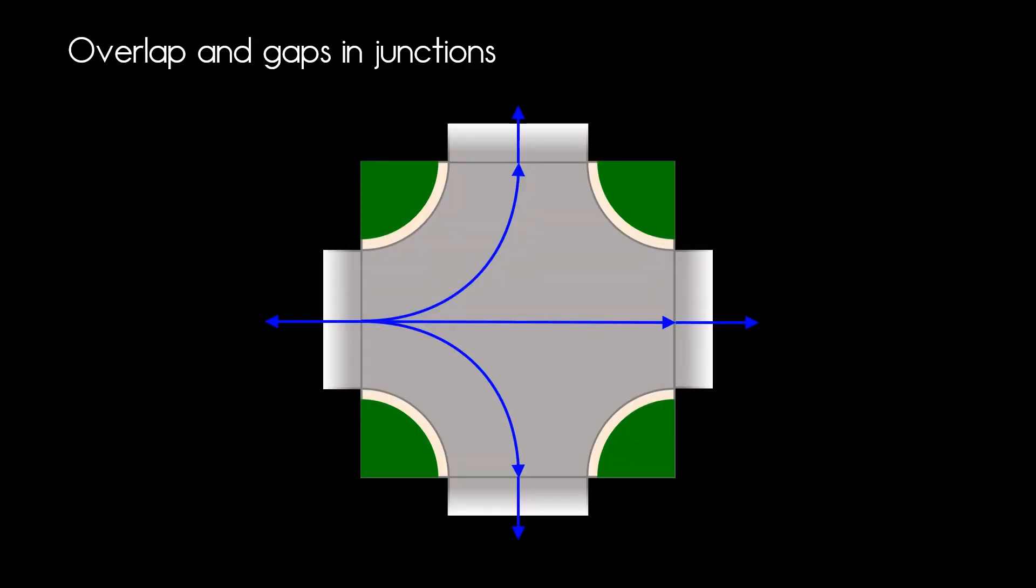There is something we need to be aware of, and that is that the connecting roads may overlap within the junction. We can see in this example how those roads overlap at the starting point. This is completely fine but needs to be considered when modeling.